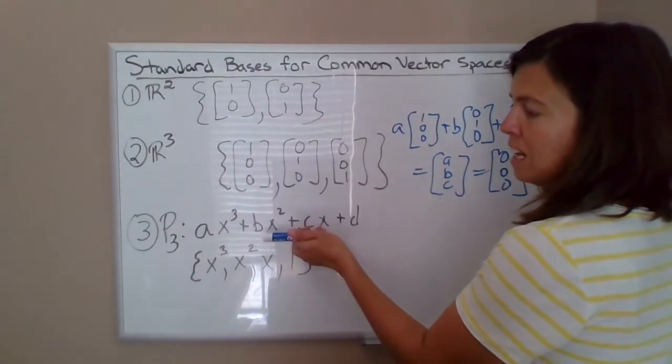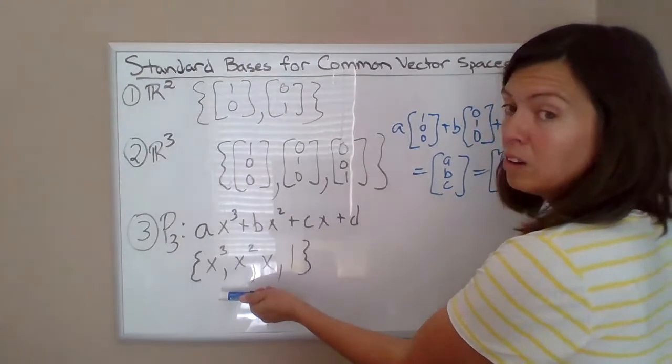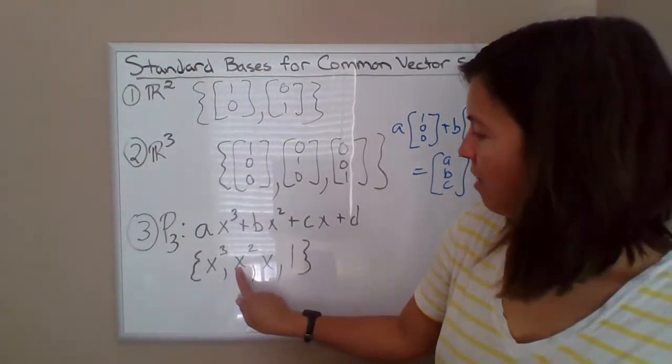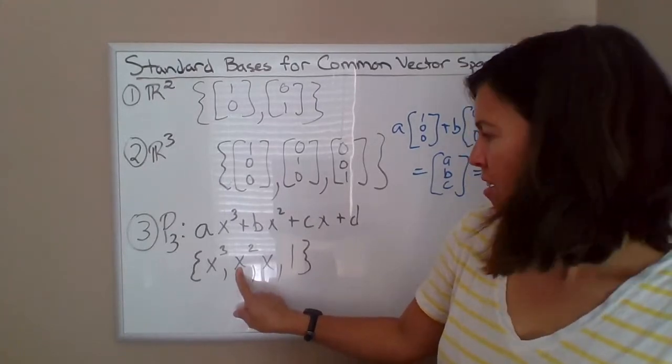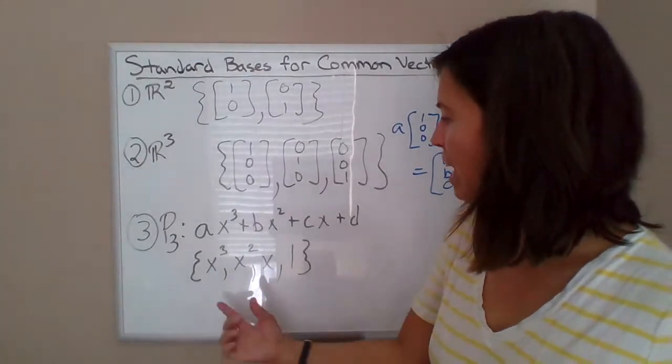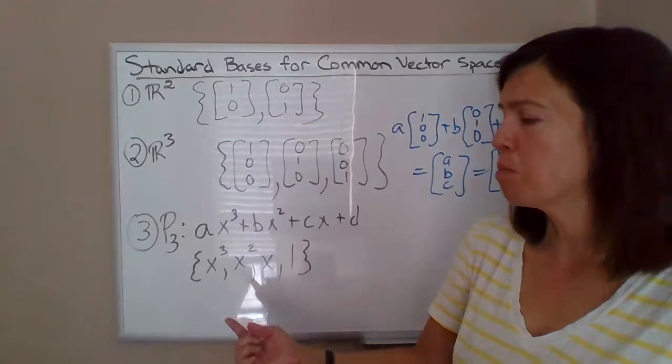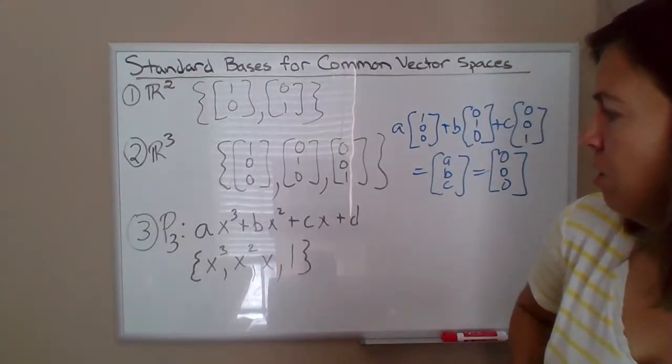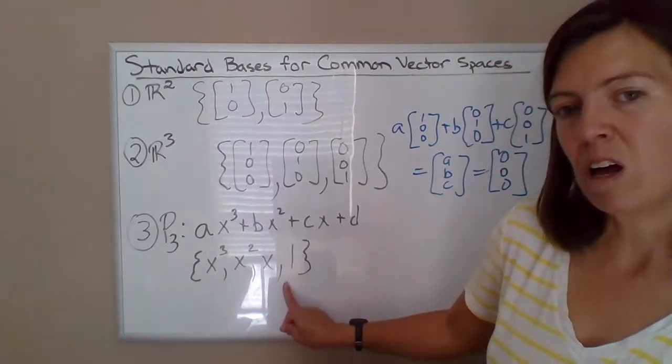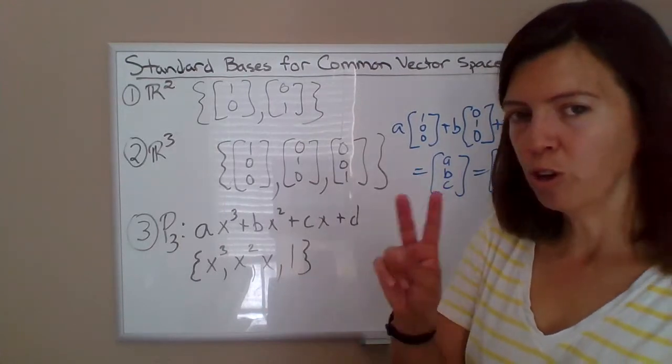So then I'm saying that anything in P³ can be written as a linear combination of these four polynomials. And they are linearly independent. It's not like you can write X squared as a combination of X cubed and X to the first as a linear combination of those. We can't do it. You can't add up something times X cubed, something times X and generate X squared. It's not going to happen. And same with any other individual element here. So none of these polynomials is a linear combination of the others.